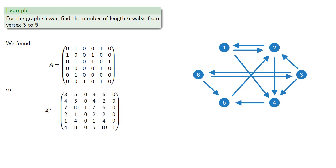We want the entry in the 3rd row, 5th column. The A35 entry of A to the 6th is 6, and so there are 6 paths from vertex 3 to vertex 5.